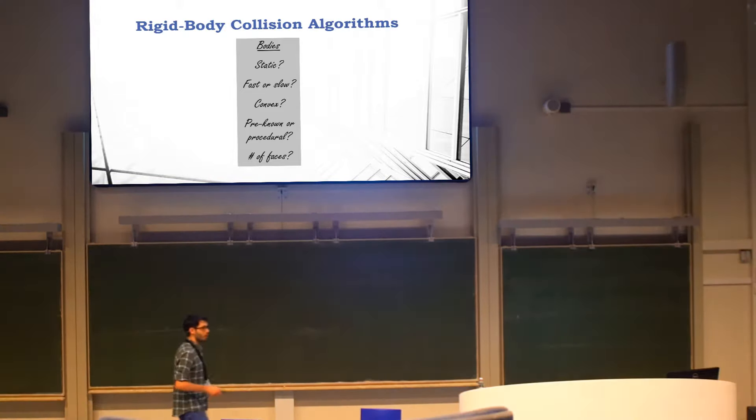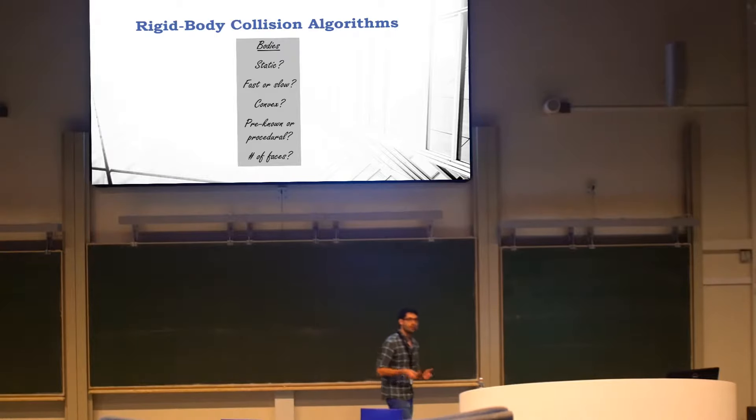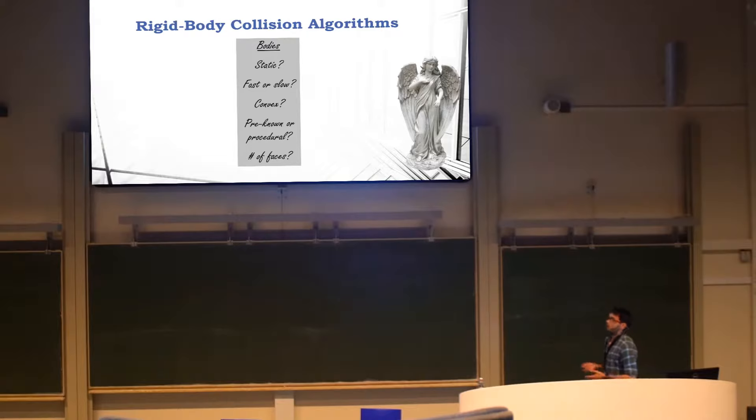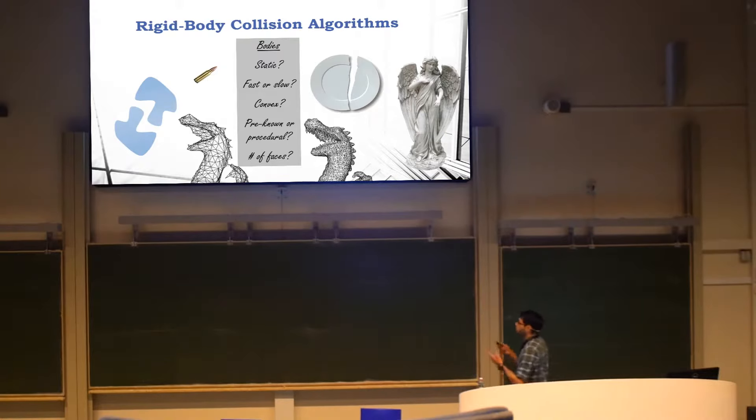The first thing to note about collision detection is that it is an extreme diversity. If, for example, you wanted to simulate a scene with all kinds of everyday objects, we probably have to distinguish between different cases. For example, we have approaches suitable to objects which are part of the environment, and solutions suitable for fast-moving objects. And if I know that some objects are convex, then I can take advantage of that. I might have to consider objects that are procedurally generated, and also the number of faces of the geometry, and the number of instances.